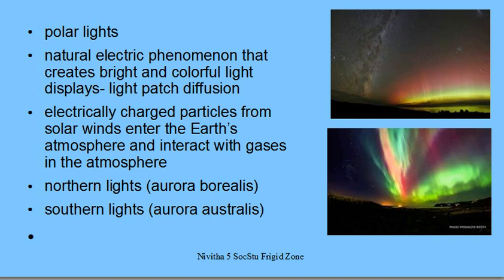How is this caused? The electrically charged particles from the solar wind enter the earth's atmosphere and interact with the gases in the atmosphere, causing patches of diffusion of light particles and creating a colorful bright phenomenon. This happens mostly at night and these are bands of colored light — these are the auroras.